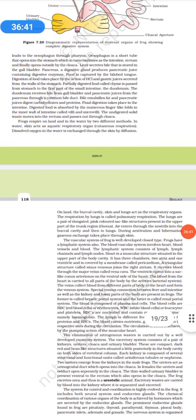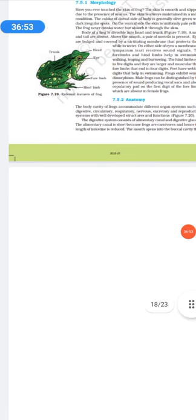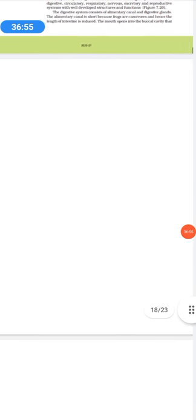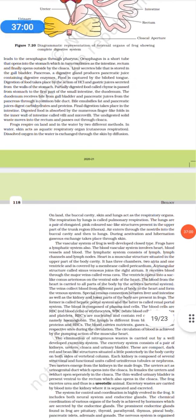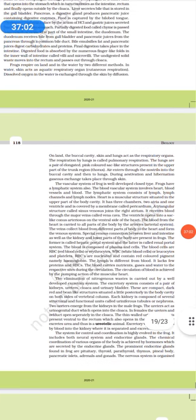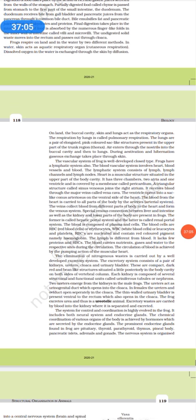Frogs respire by two different methods. In water, skin acts as an aquatic respiratory organ. Dissolved oxygen in the water is exchanged through the skin by diffusion. On the land, they have got lungs. They will respire via their lungs. Here the air enters through the nostrils, into the buccal cavity, then into the lungs. The vascular system of frog is well-developed, closed type. Frogs have a lymphatic system also.